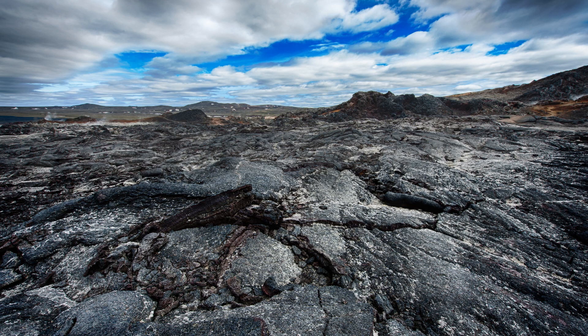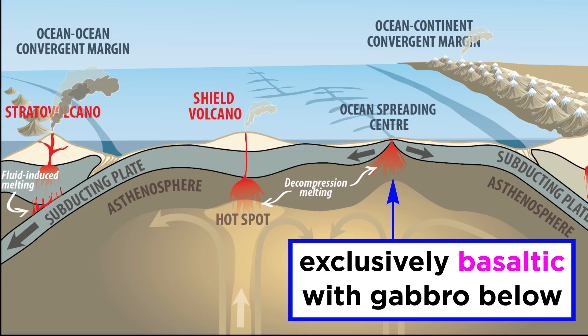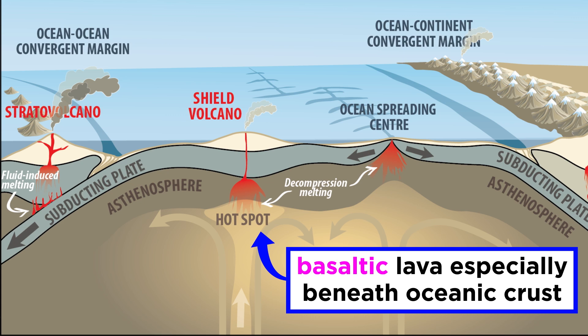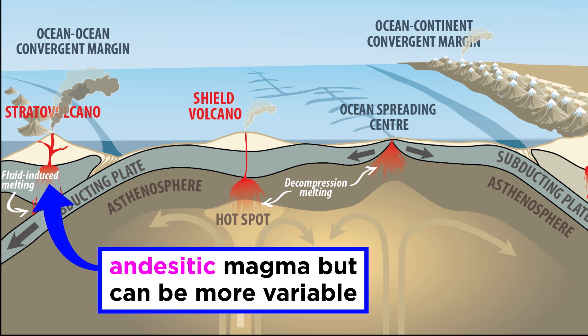So what types of igneous rocks are found at the surface? That depends on where you look. For instance, the lava that erupts from mid-ocean ridges is exclusively basaltic, with gabbro forming deeper beneath the surface, which is basically just basalt with big crystals. Hot spots are also capable of producing massive amounts of basaltic lava, especially when they are beneath oceanic crust. Subduction zones tend to produce andesitic magma, but can be much more variable, also being influenced by crustal thickness.